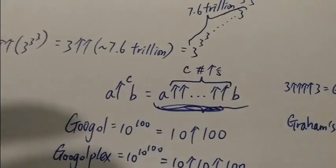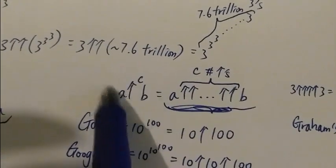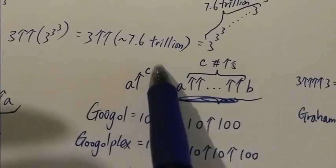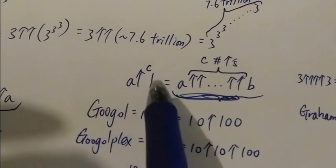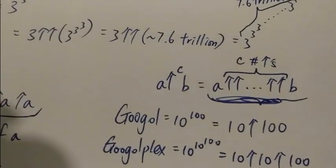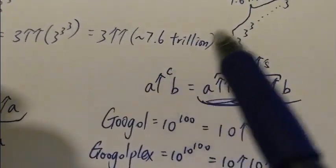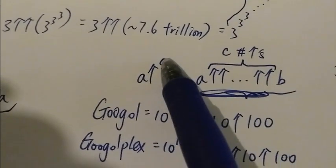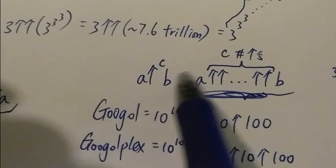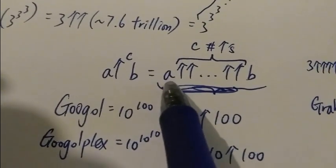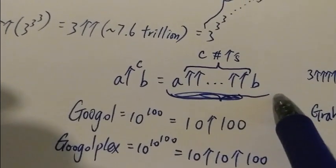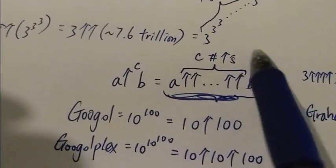And then another thing is that you can also write this thing as A arrow C B in this kind of format. So if there are many arrows, then the shortcut way to write it is just write the number of arrows as C. So A arrow C B just equals to A arrow A arrow A with a lot of arrows B, and there are C number of arrows.